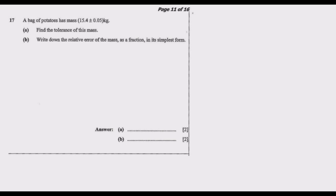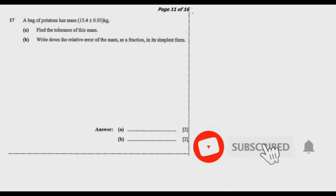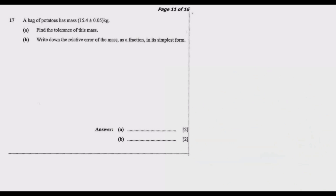Welcome dear viewers. Today we are looking at question 17 from the 2017 GCE Mathematics Paper 1. The question states: a bag of potatoes has a mass of 15.4 plus or minus 0.05 kg. Find the tolerance of this mass, write down the relative error as a fraction in its simplest form. Let us start with question a.